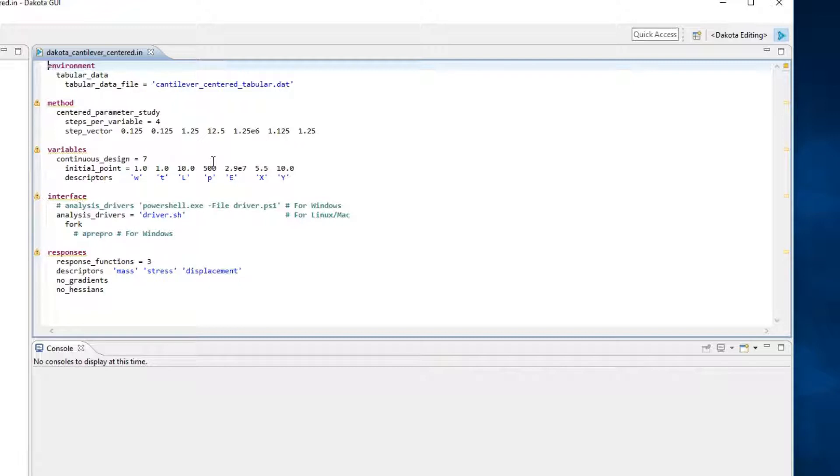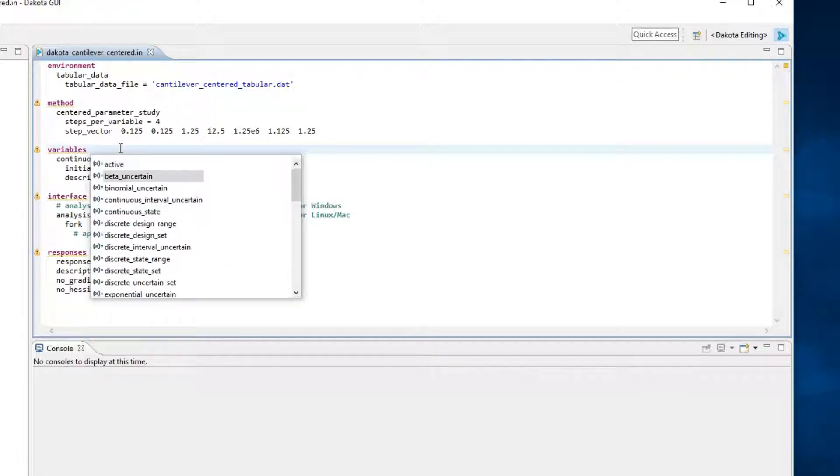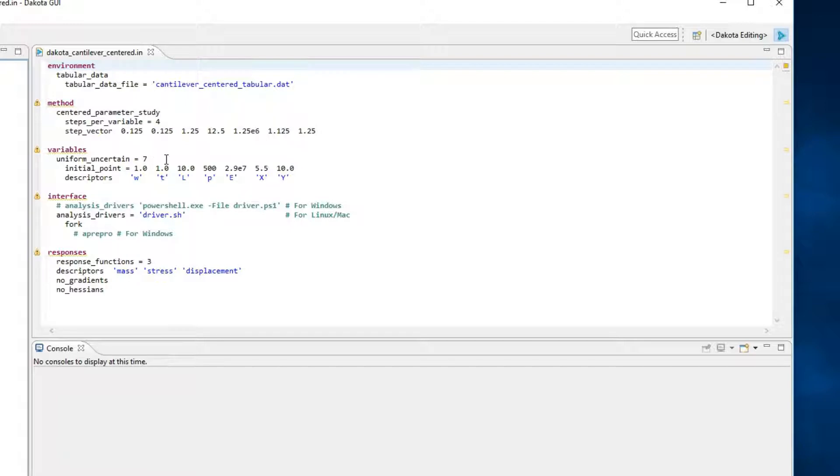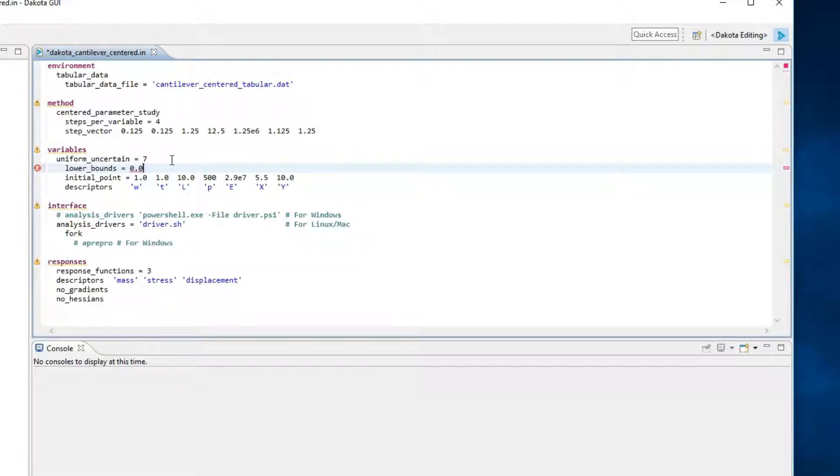Position your cursor after the variables keyword, then use the Dakota text editor's completion proposal tool by holding control and space, or command and space on Mac. Select uniform uncertain from the list, and specify a variable count of seven. Then delete the original line specifying continuous design. Note that our variables block has specified the seven input variables to the cantilever beam that we discussed earlier. We will also specify lower and upper bounds for our uniform uncertain variables, using the keywords lower_bounds and upper_bounds.